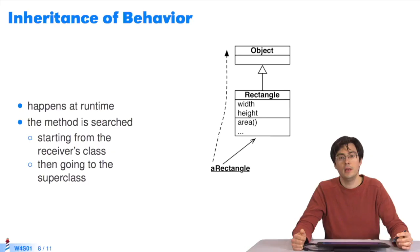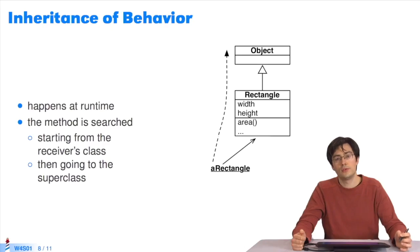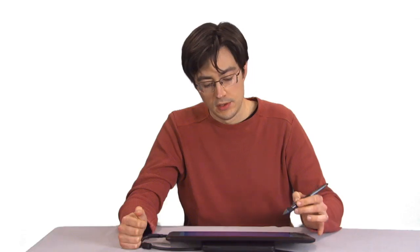For behavior, the inheritance mechanism changes. Watch the following sequences to see exactly how it occurs. So, on the whole, behavior inheritance happens at run time. In other words, when you send a message to an object, a method is searched for in the class hierarchy.